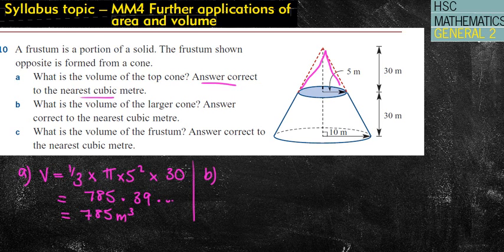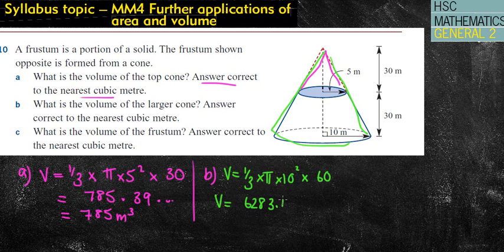Part B has asked for the volume of the larger cone. The larger cone is that big one there. So that's going to be the same formula, one third times pi times 10 squared now. But the perpendicular height now is 60 meters. So I chuck that into my calculator. We get 6283.18 dot dot dot. It's the nearest meter. It's 6283 cubic meters.